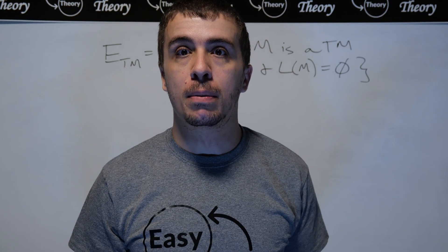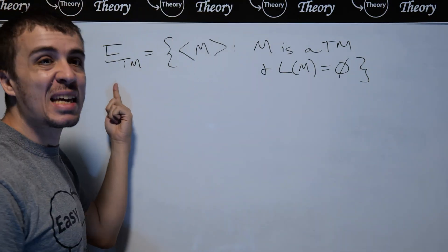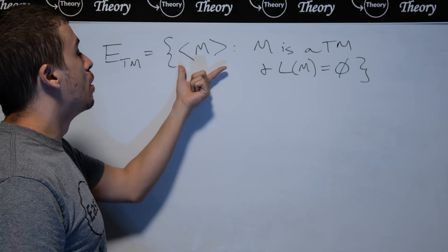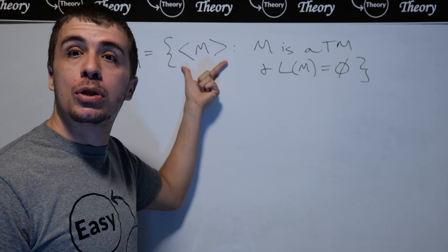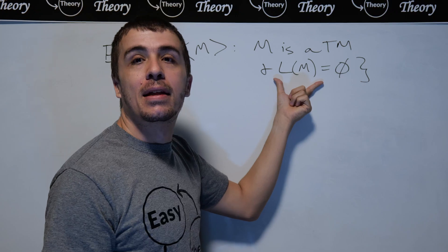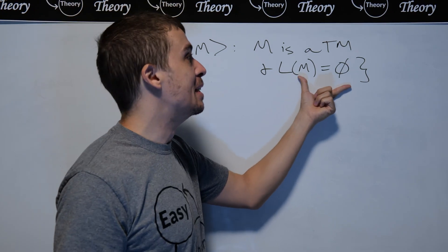So I want to apply Rice's theorem to this language, which is called ETM, which is called the emptiness for Turing machines problem. And here we have a set of descriptions of Turing machines, such that M is a Turing machine, obviously, and the language of that machine is empty.